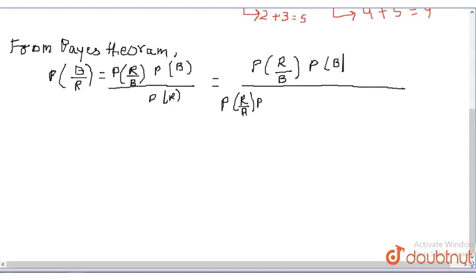Goes to probability of R upon A, probability of A plus probability of R upon B, probability of B.